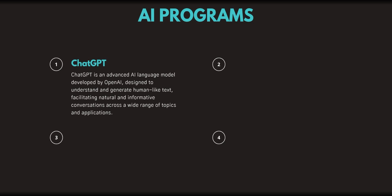Here are the programs that we're going to be going over in this course so you get some practical skills and really get off running with AI tools. ChatGPT is an advanced AI language model developed by OpenAI, designed to understand and generate human-like text, facilitating natural and informative conversations across a wide range of topics and applications. You can do a lot of great things like generating programs, writing proposals and letters, finding and processing information, and even writing prompts to help with other AI software.